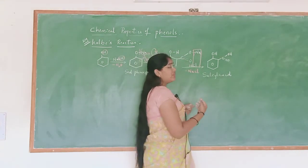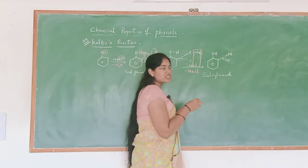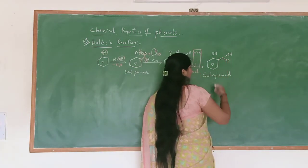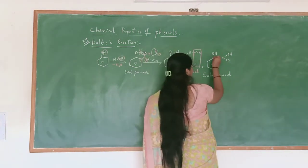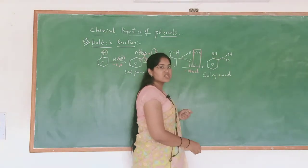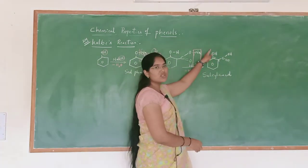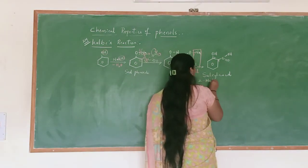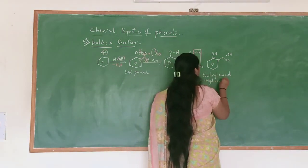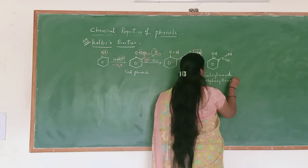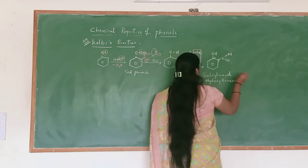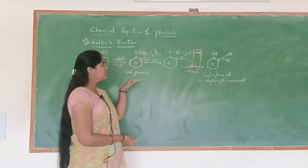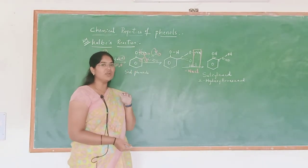Finally, salicylic acid is obtained. It can also be written as 2-hydroxybenzoic acid, because the functional group is carboxylic acid at position 1, and at the second position OH is present. Then it is known as 2-hydroxybenzoic acid. This is the Kolbe's reaction, which is very important for exams.